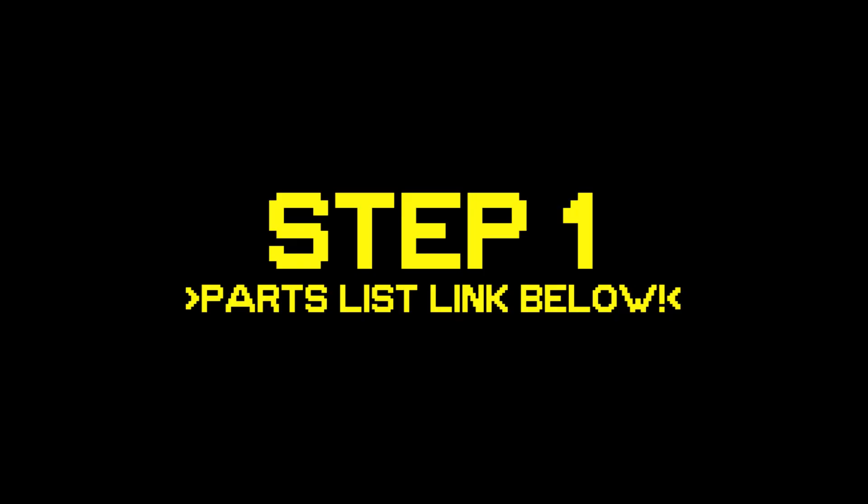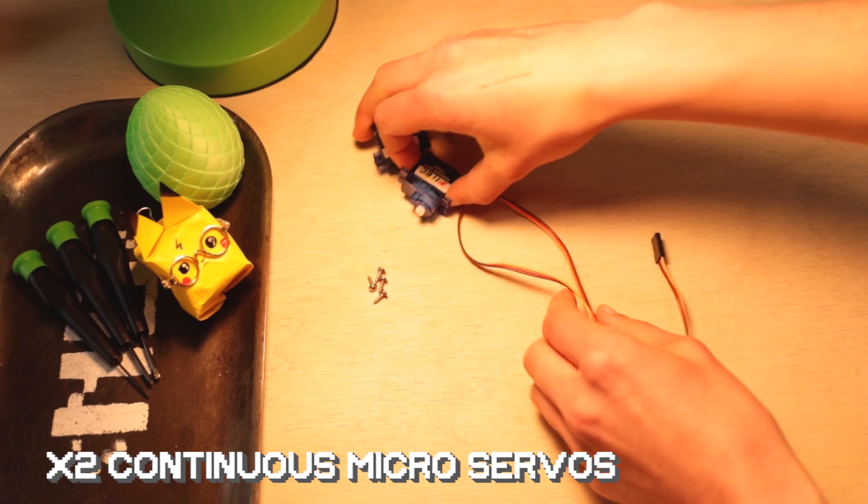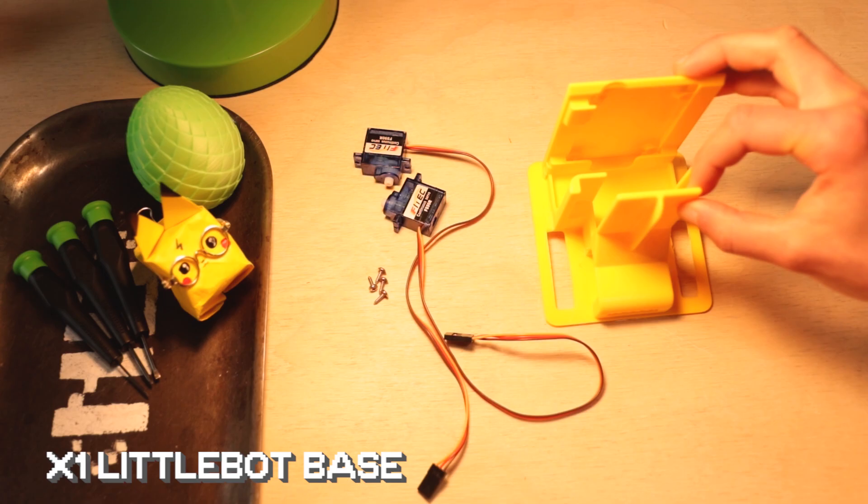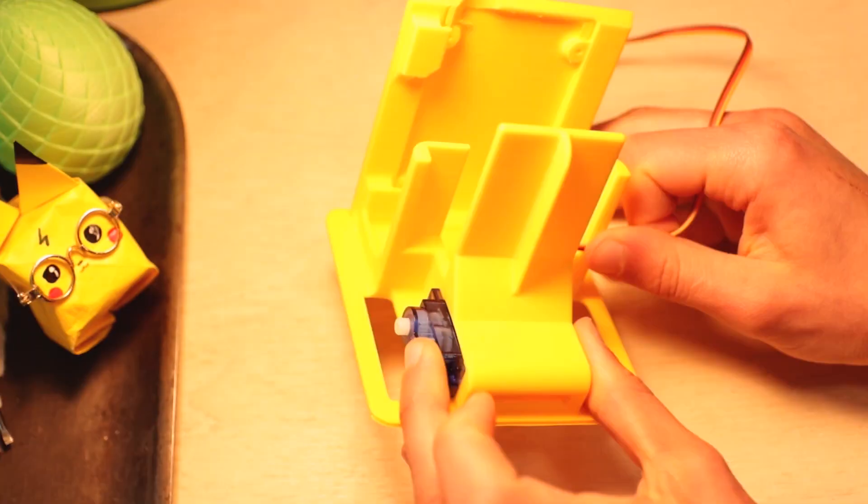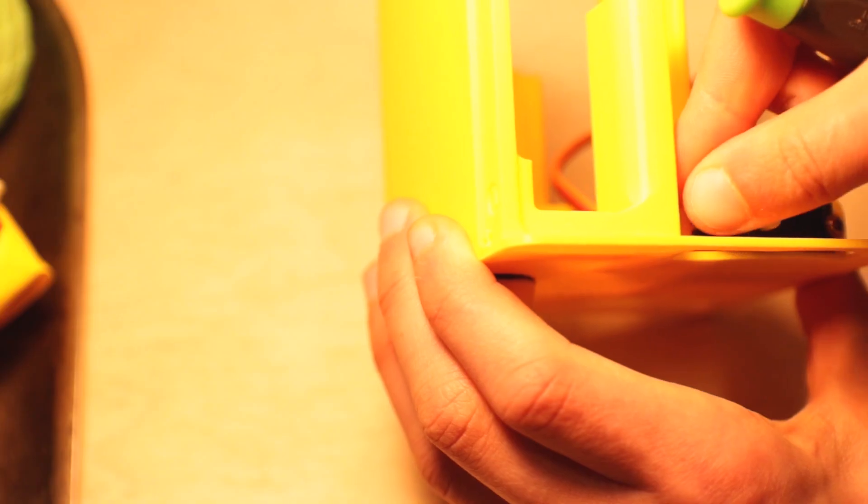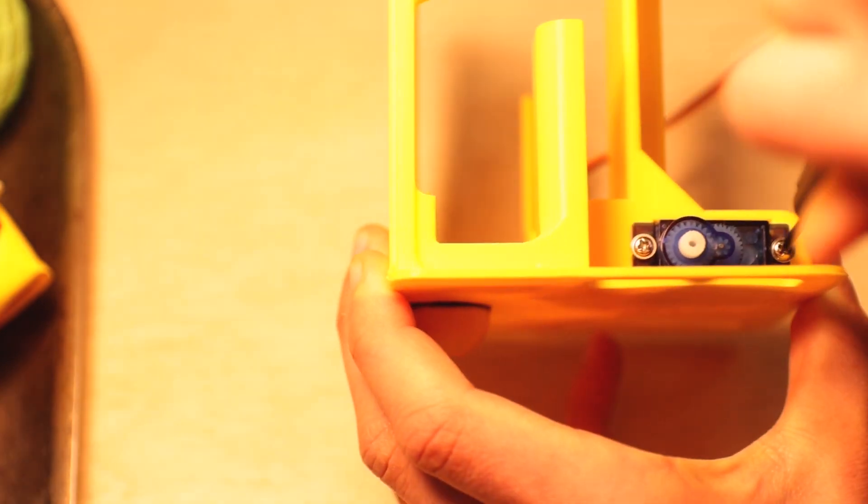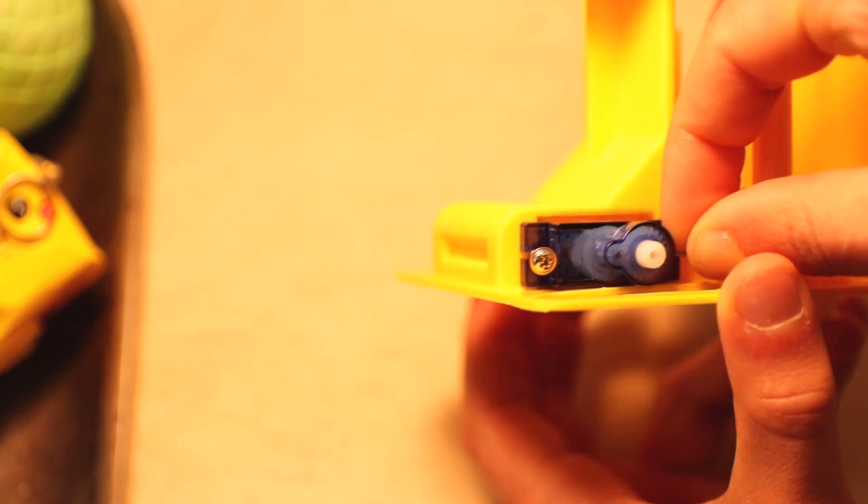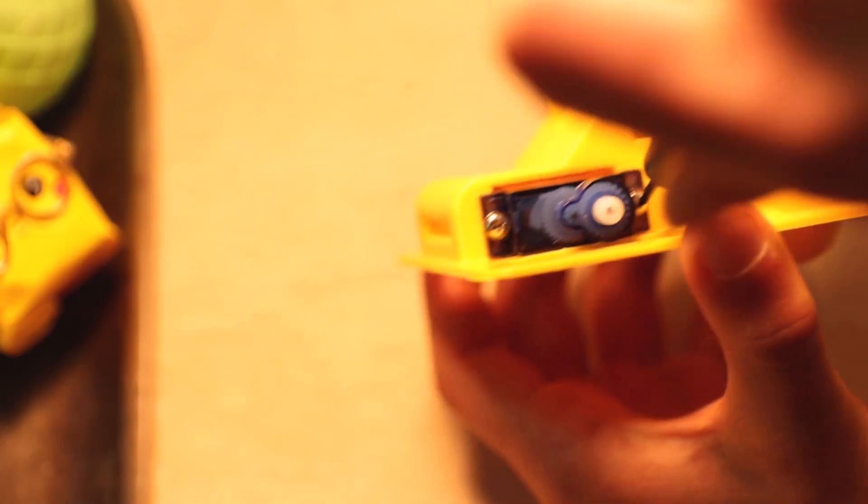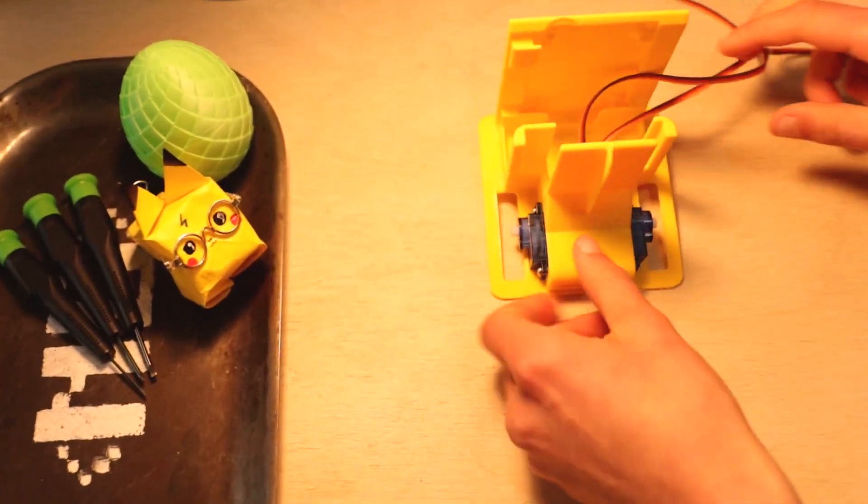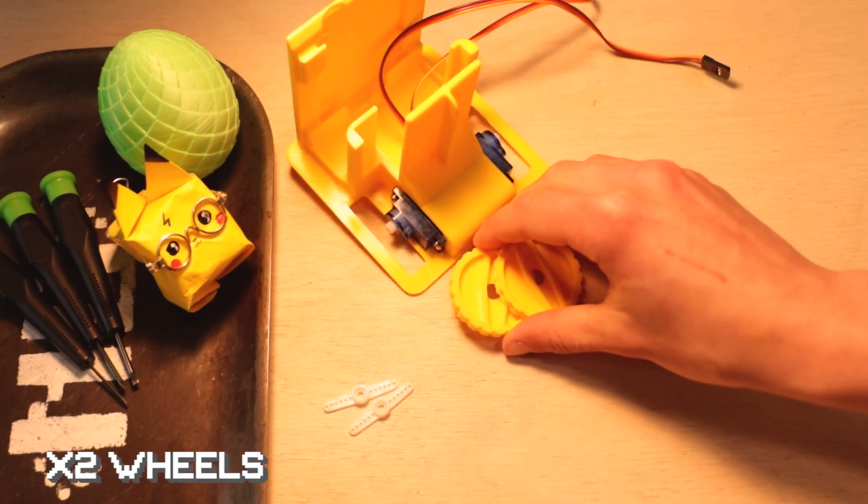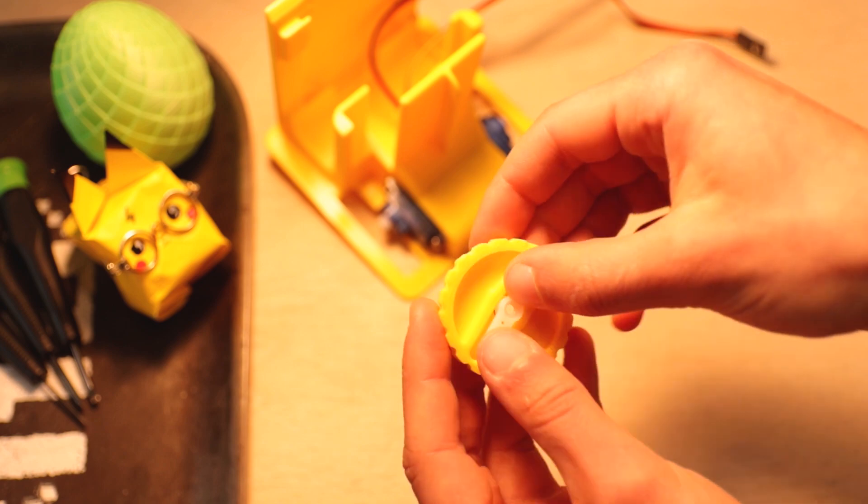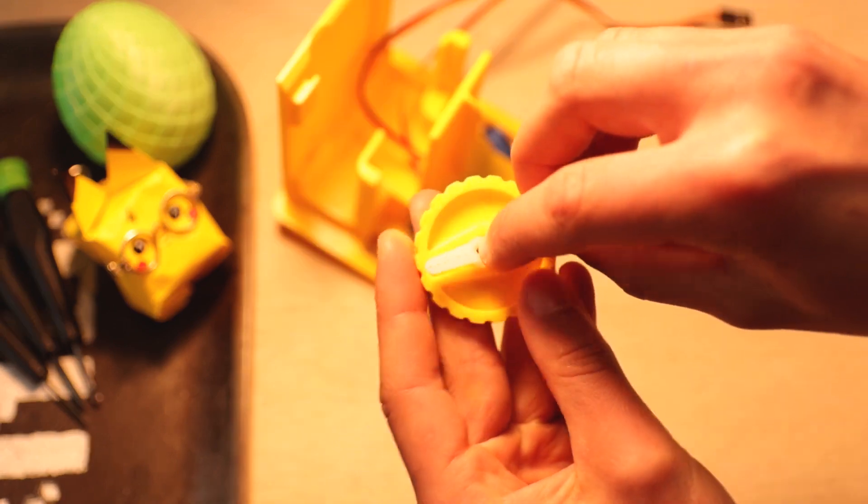Step one: grab two continuous rotation micro servos, four servo mounting screws, and one Little Bot base. Feed your servo cables through these little holes in the base and pop each servo in there. Secure each one with a couple of servo screws. Step two: grab two servo horns, two Little Bot wheels, and two servo spline screws. Pop each of those servo horns into a wheel and then screw them into the servos.